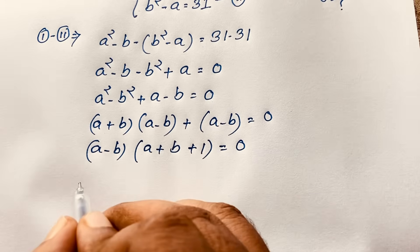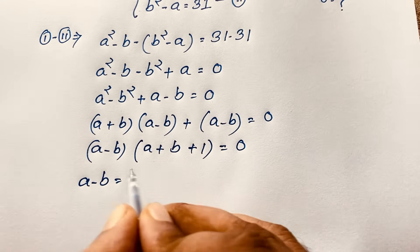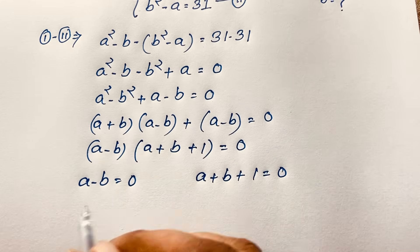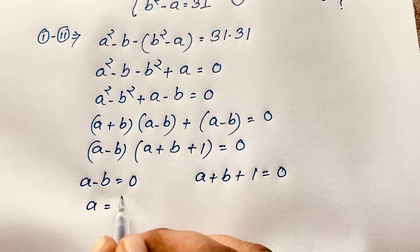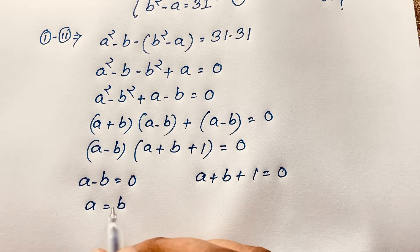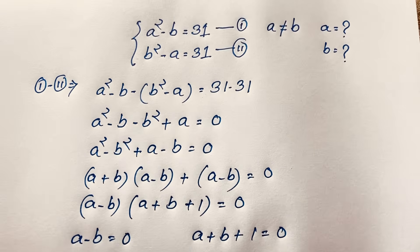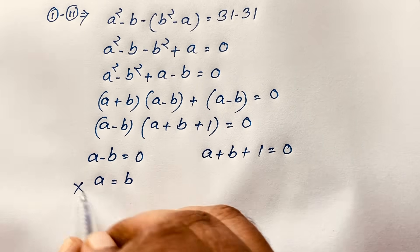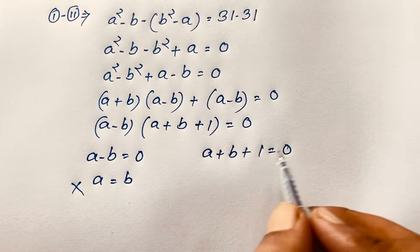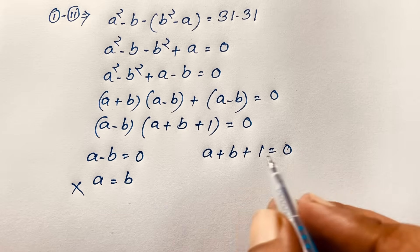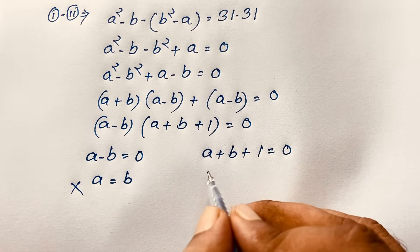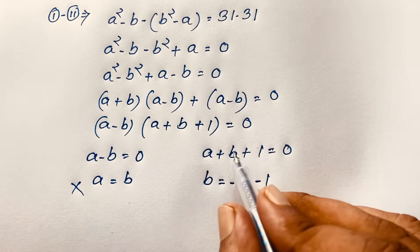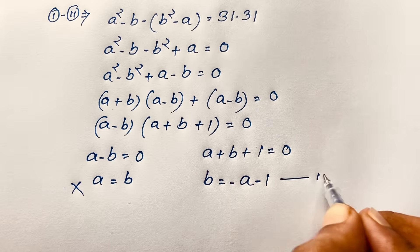You can see here A minus B equals 0, then A plus B plus 1 equals 0. Now A equals B from the first case, but since A is not equal to B, it is not possible. In the other case, A plus B plus 1 equals 0, so B equals minus A minus 1. This is our third equation.